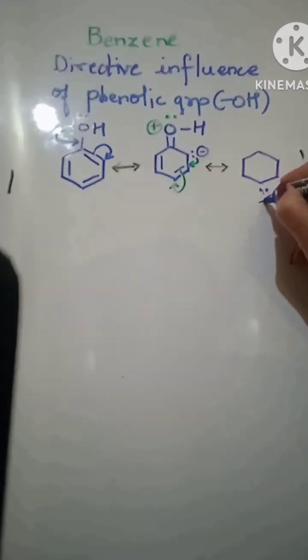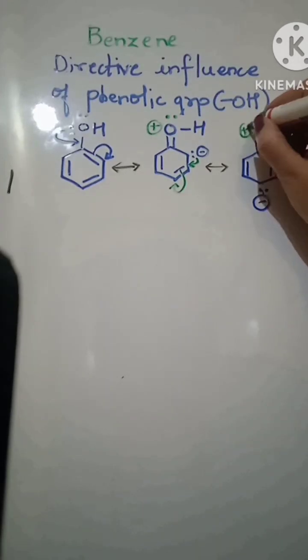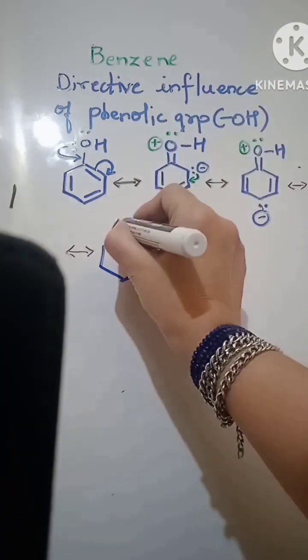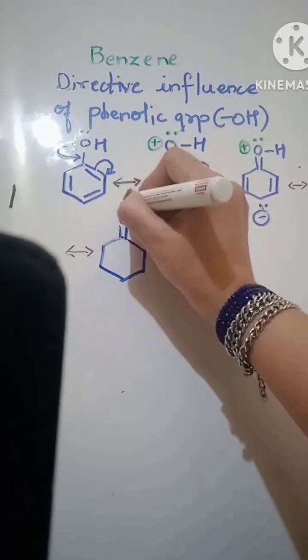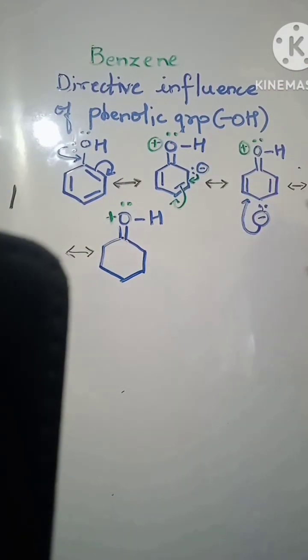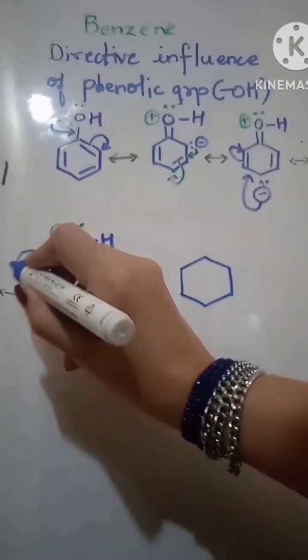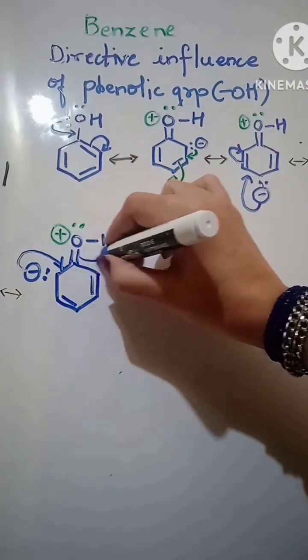Instead, they keep moving in such a way that they sit only in ortho and para positions of the benzene ring. Since OH is ortho and para directing, the electron density is mainly at these positions. Phenol has this additional resonance of oxygen resonating into the ring. Now finally, the electrons continue moving.